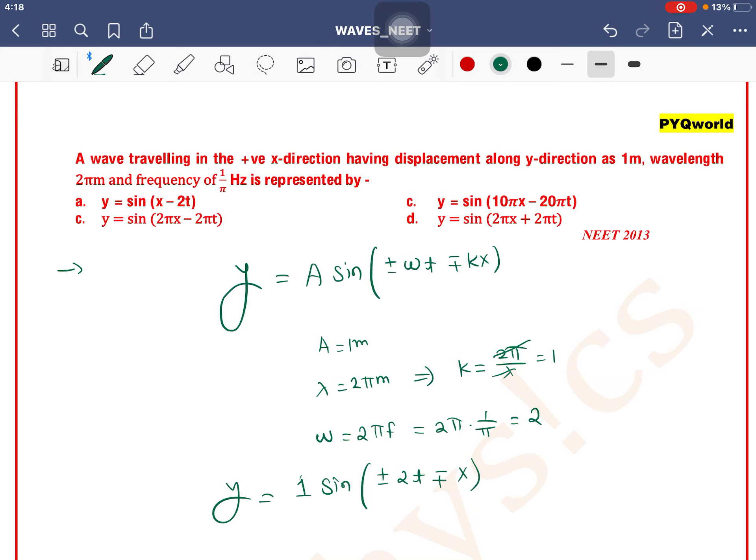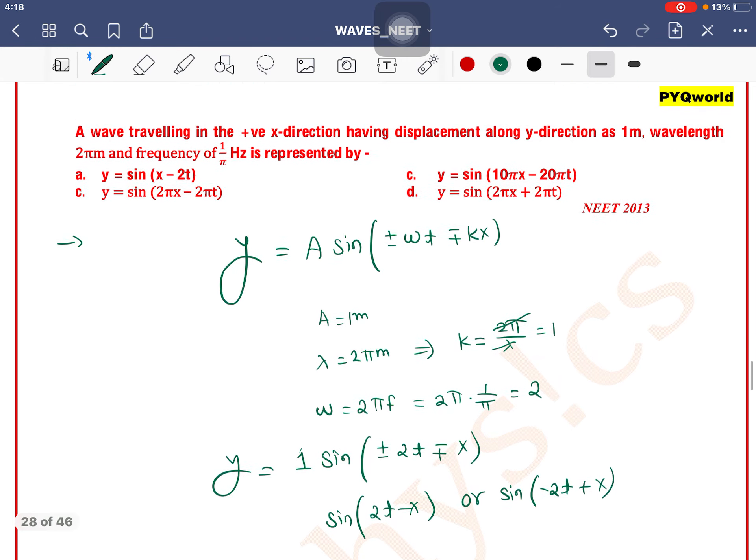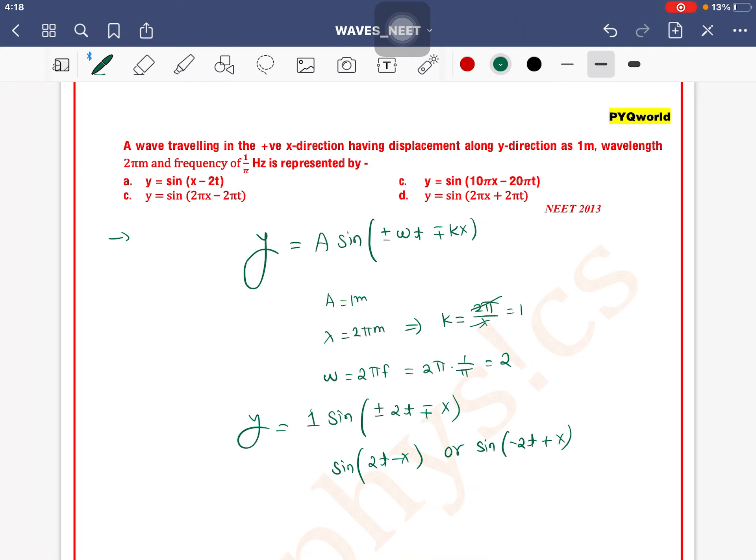k is 1, so 1x. So y equals sine of either 2t minus x or sine of minus 2t plus x. So y equals... the correct option is option C.